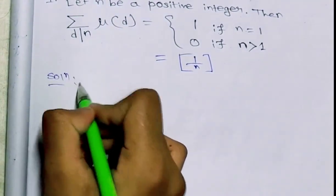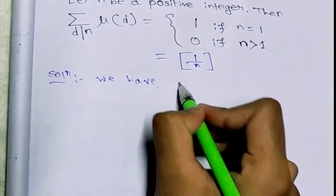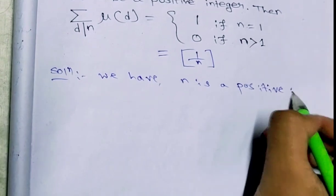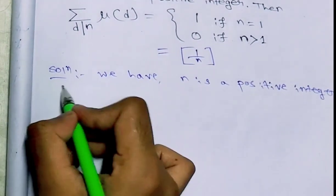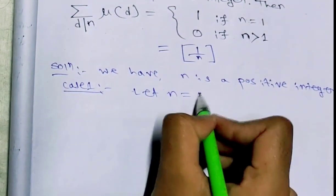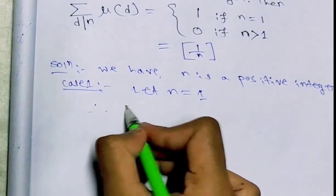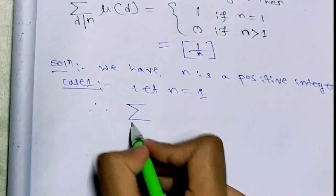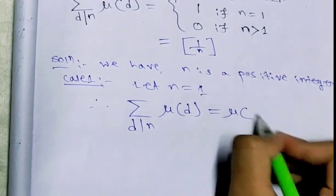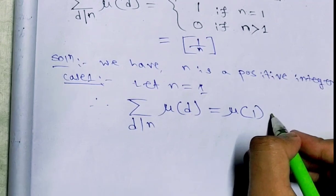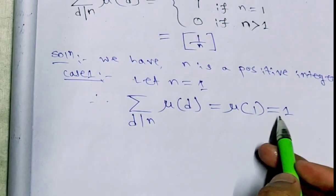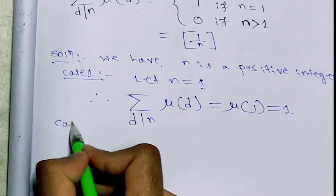Solution: We have n as a positive integer. Case 1: Let n equal 1. Therefore, the summation over d dividing n of μ(d) equals μ(1). And μ(1) equals 1, as we already know from the definition of the Möbius function. So μ(1) = 1.